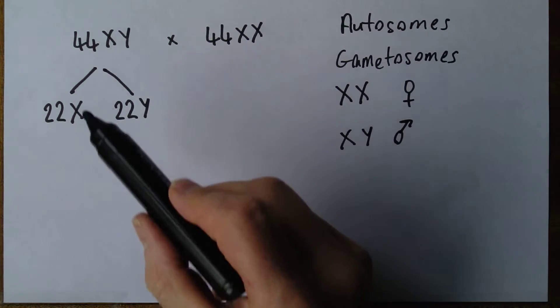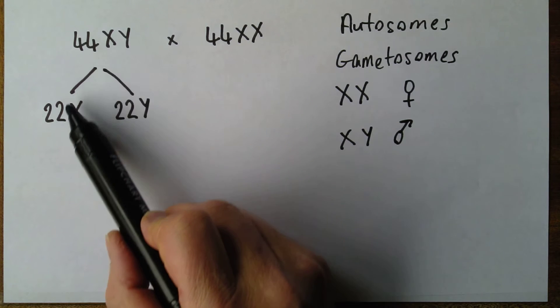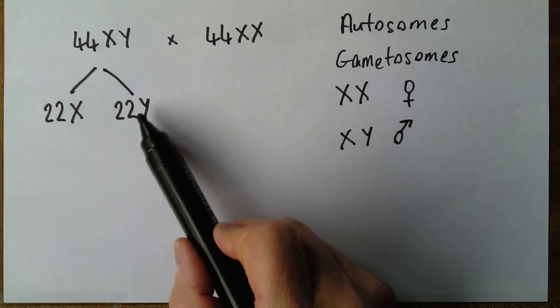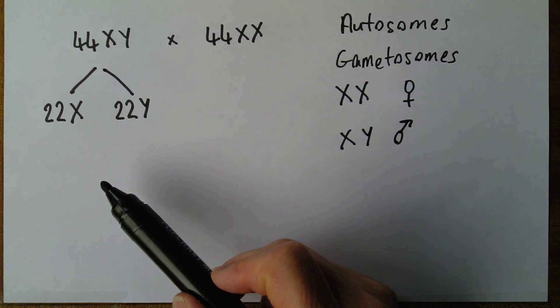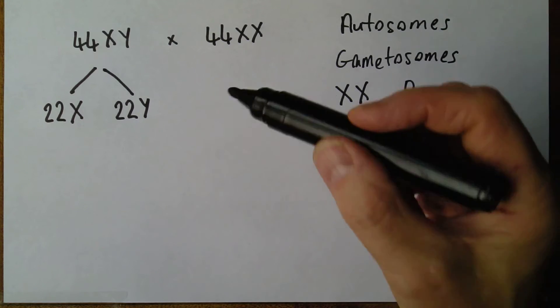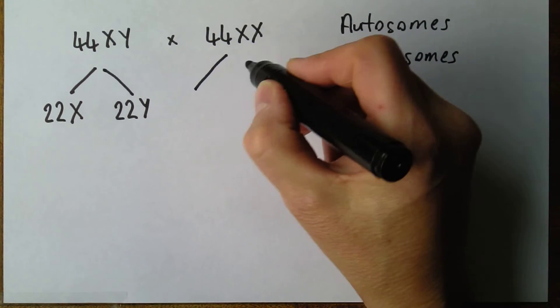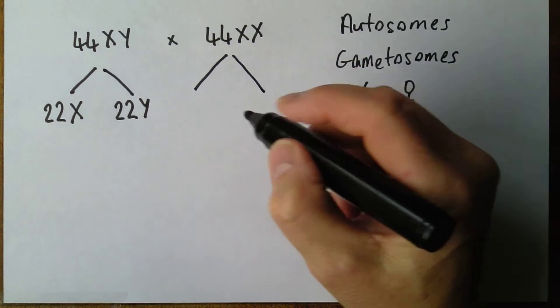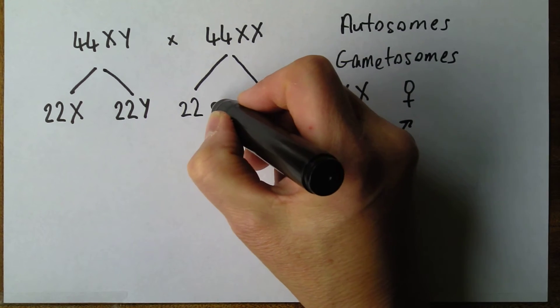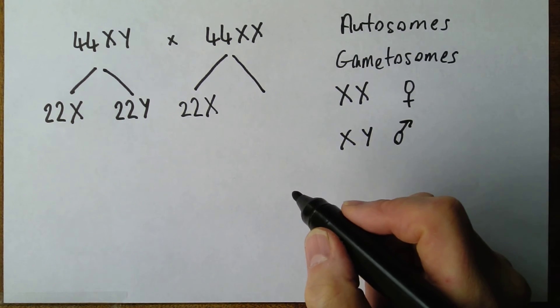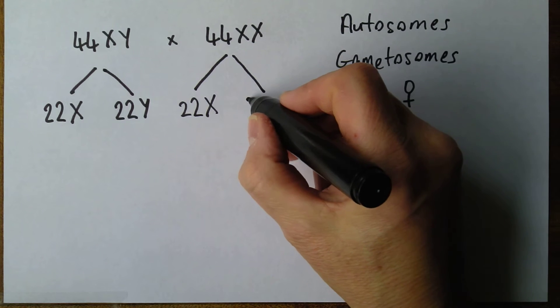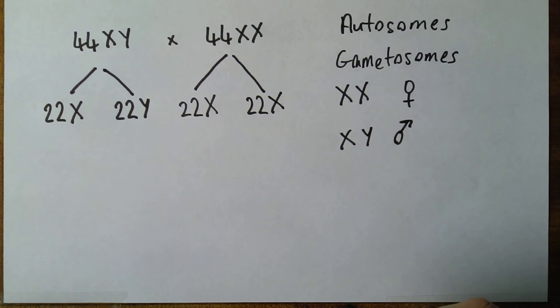So one of each homologous pair of chromosomes goes into each of the gametes. And likewise for the female producing the ova, there's always going to be the 22 autosomes with an X in some of the ova, and in the other ova 22 autosomes plus an X. Again, it's going to be the same thing.